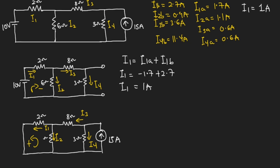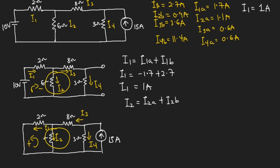Now for I2: I2 equals I2A plus I2B. When considering the 10 volts this was the direction of I2, and when considering the 15 amperes it was also the same direction. Since both directions are the same, we don't negate any values. So I2 equals 1.1 plus 0.9, giving us I2 equal to 2 amperes.